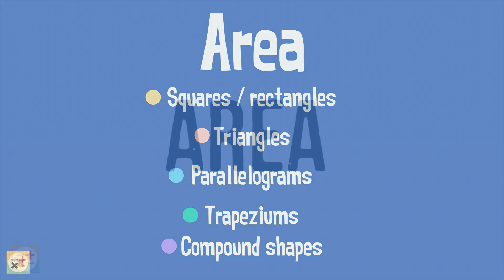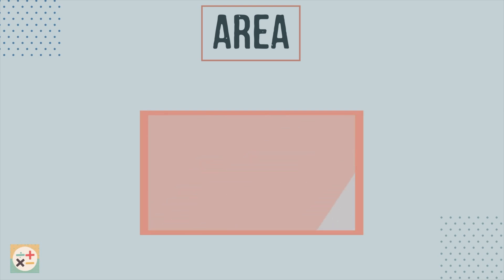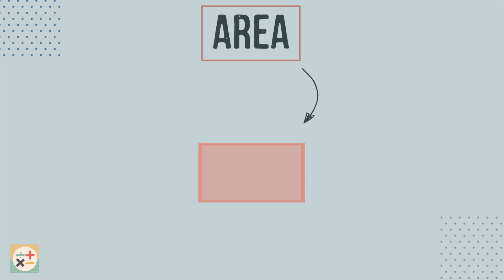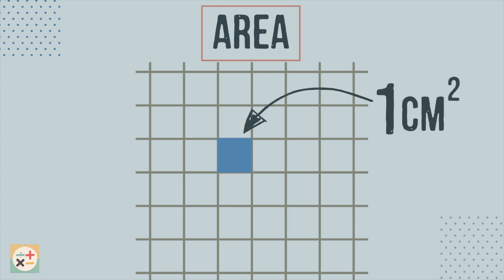Let's start by focusing on how to find the area of squares and rectangles. When we talk about area, we mean the amount of space that a 2D shape takes up. Here is a square which takes up one square centimeter of space. Square centimeters are one of the ways in which we can measure the area of a shape, usually when the area is small. Bigger areas are often measured in square meters.